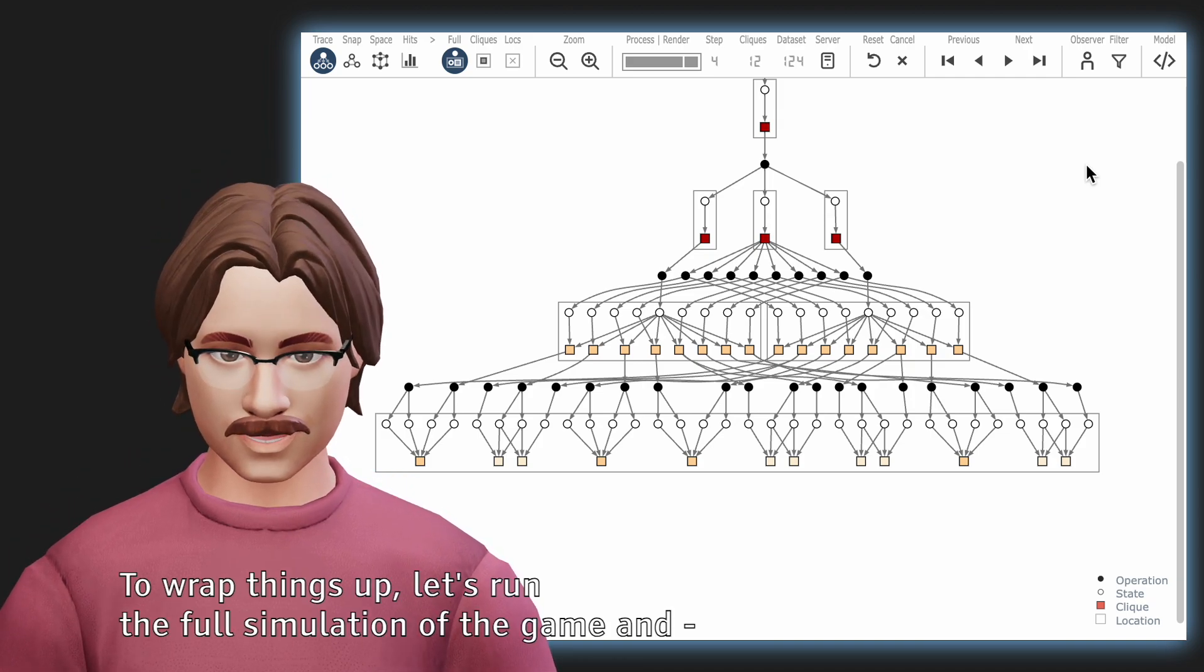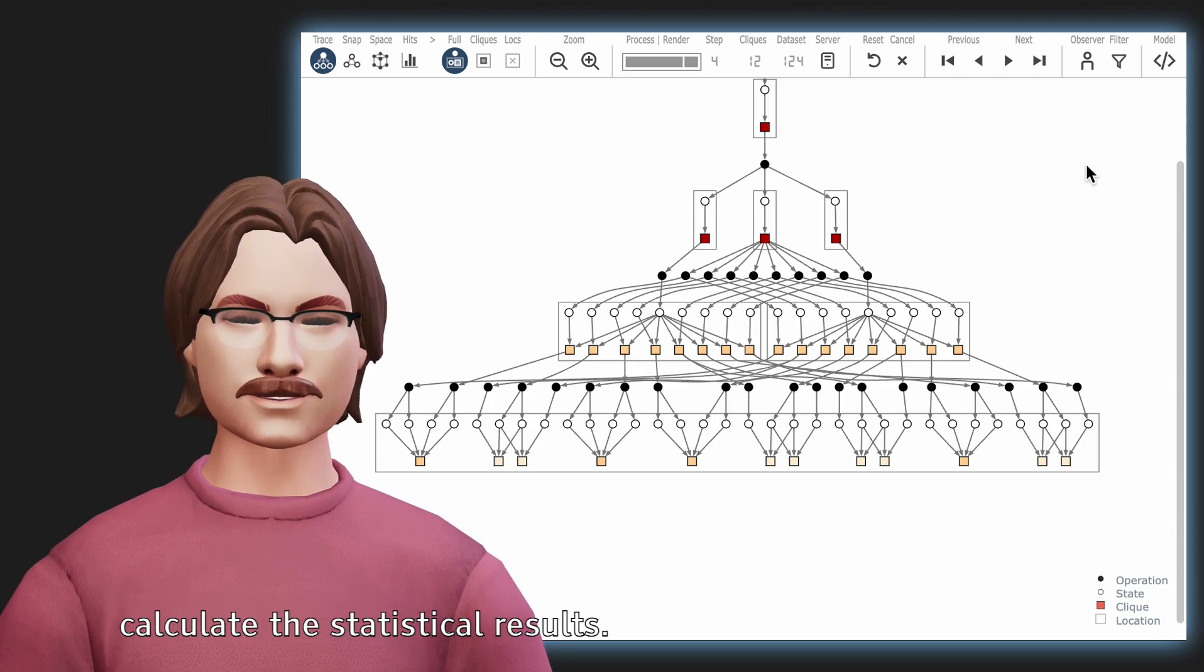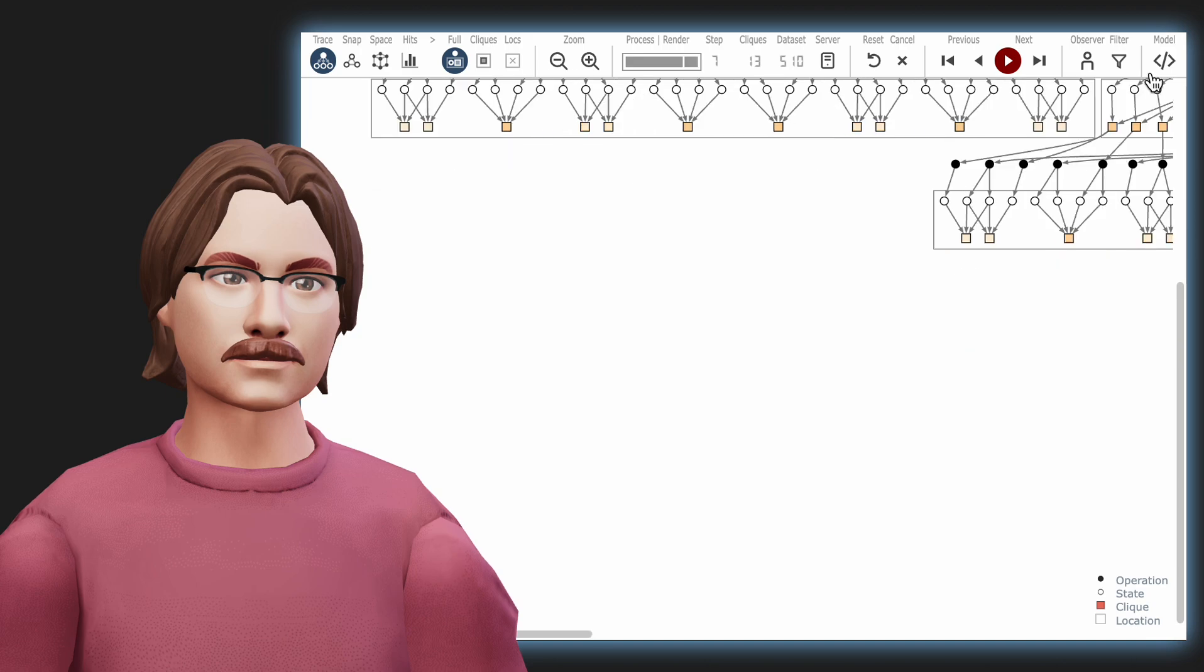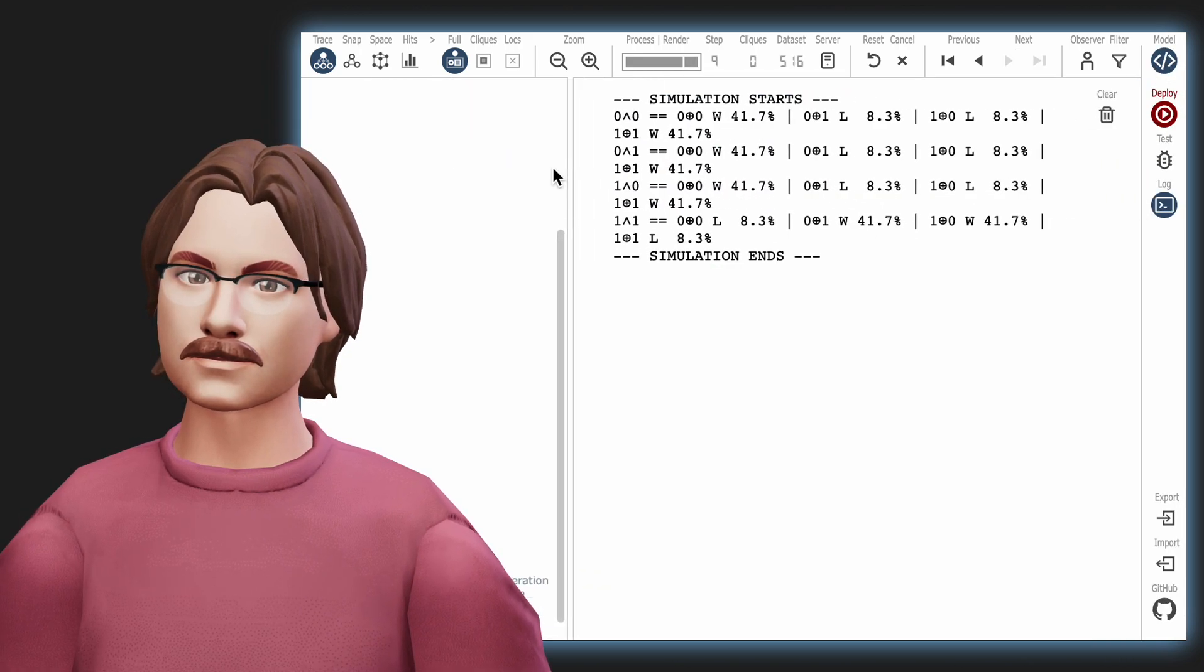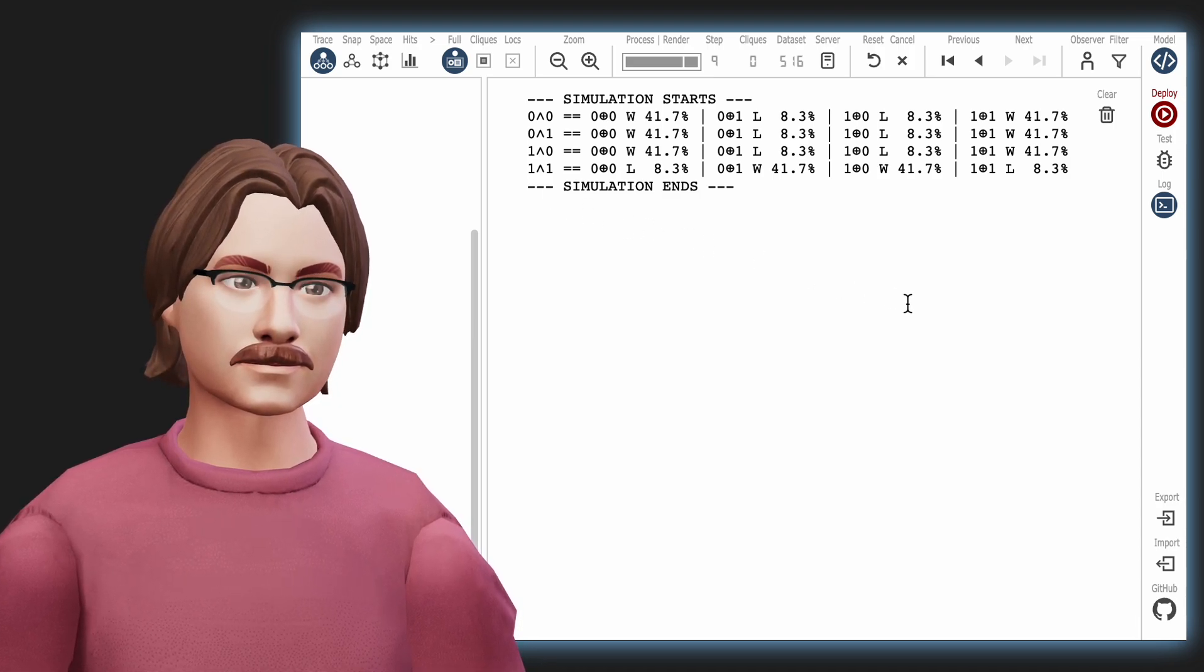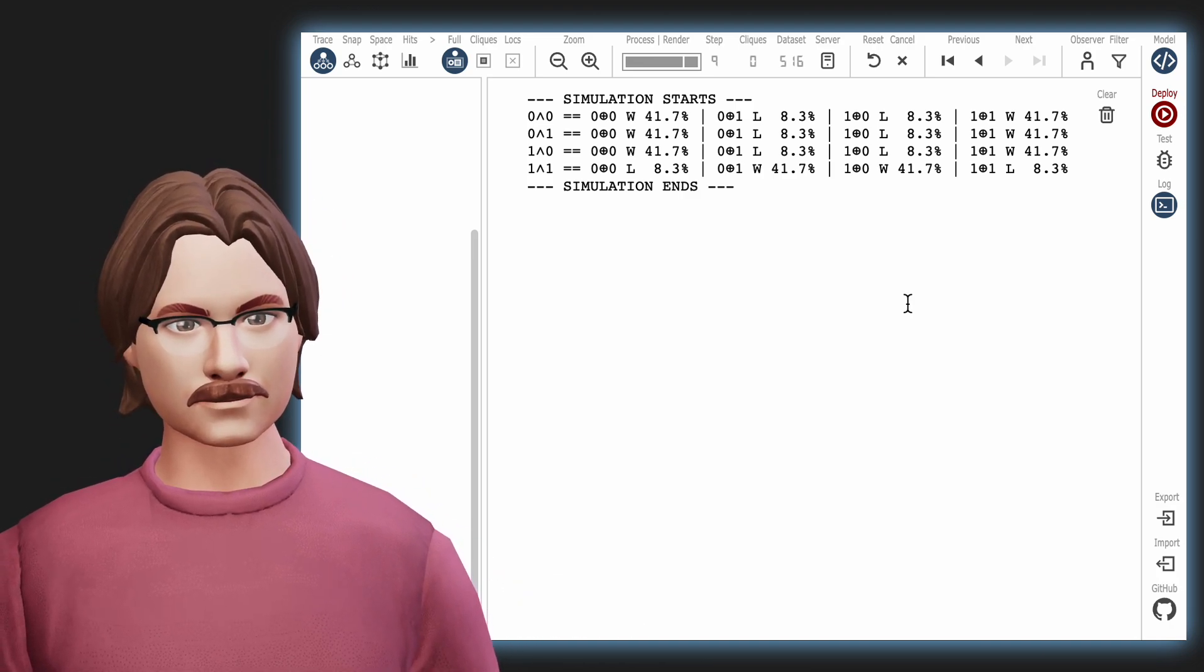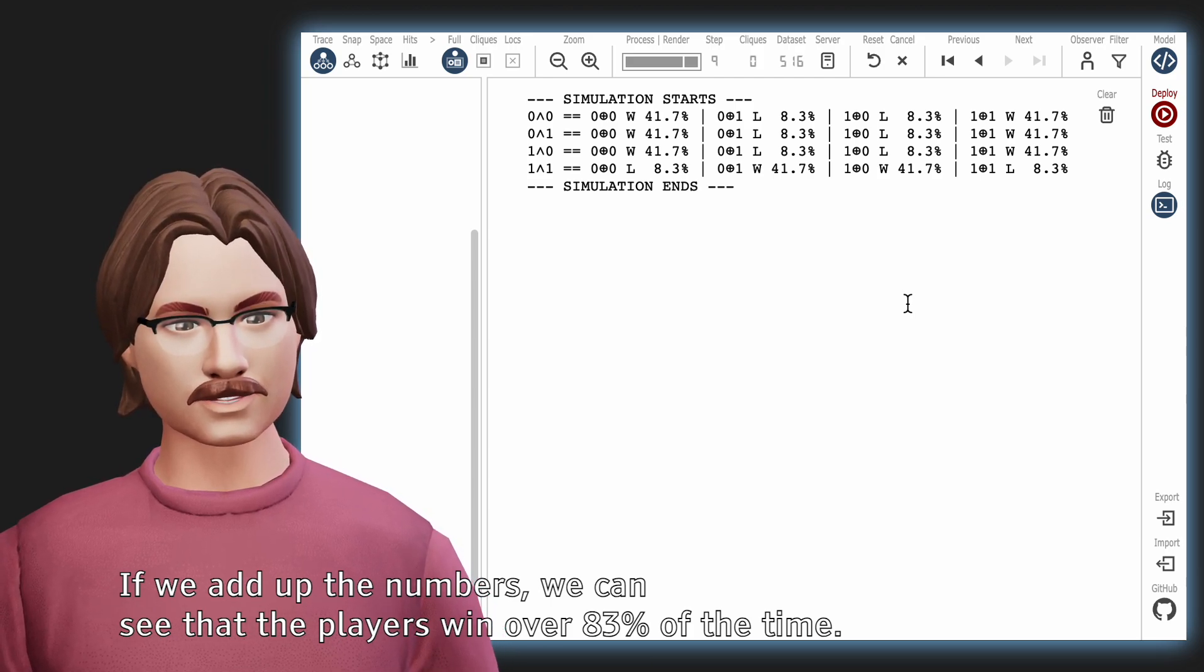To wrap things up, let's run the full simulation of the game and calculate the statistical results. Each line represents one possible question pair and the distribution of its responses. If we add up the numbers, we can see that the players win over 83% of the time.